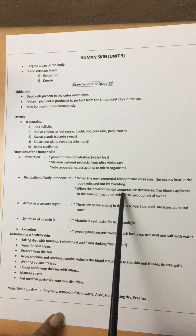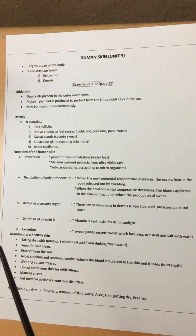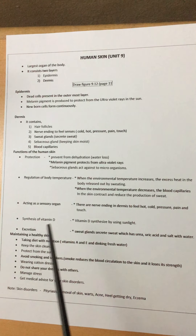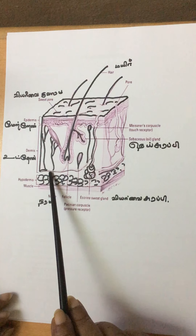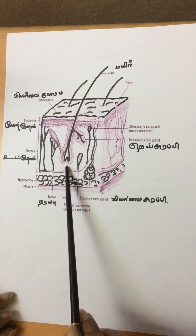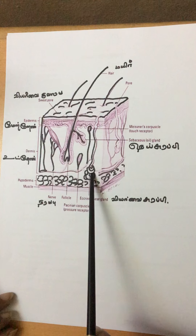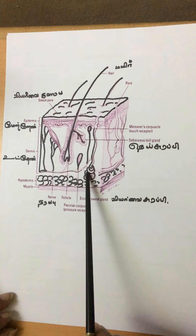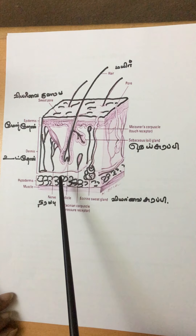When the environmental temperature decreases in cold seasons, our body temperature also drops. To retain heat, the blood capillaries in the skin contract — they shrink. Because of this, less blood is supplied to the skin, so less water diffuses from the blood to the sweat glands. As a result, the sweat glands cannot produce more sweat, sweating decreases, and heat loss from the body is prevented.